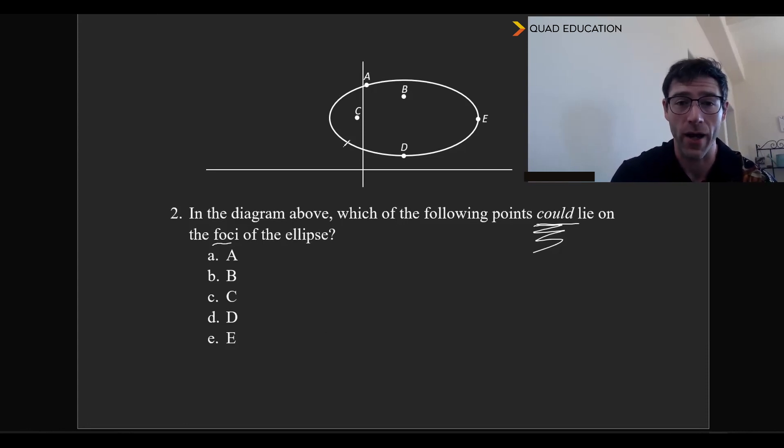along the major axis, and toward the end of the stitching on the football, and there's only one point here that could even potentially be along the minor axis, and is within the ellipse, which would be c right here, because a, d, and e are all along the ellipse, and the foci must be inside of the ellipse.